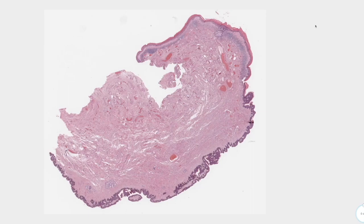Balanitis Xerotica Obliterans (BXO) is a chronic atrophic mucocutaneous inflammation affecting the penile skin. If it affects the urethra, it can result in urethral stricture, which is quite bad. In the foreskin area, it is seen as a white plaque. This condition is almost never seen in people who have had circumcision early in their life.